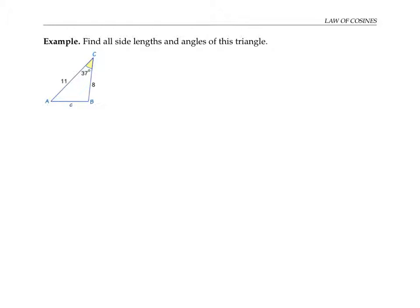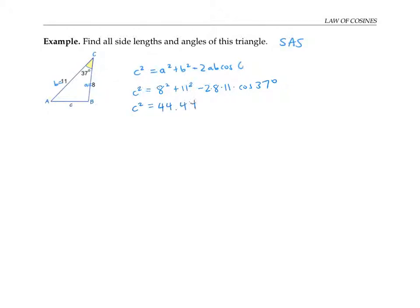Let's use the law of cosines to find all the side lengths and angles in this triangle. By convention, I'll call the side opposite angle A little a, and the side opposite angle B little b. Notice that we know two side lengths and the angle between them, so that's an SAS (side-angle-side) triangle. Writing the law of cosines with the unknown side c squared on the left, we have all the values for the variables on the right. Using a calculator in degree mode, c squared equals 44.44, and taking the square root, c equals 6.67.